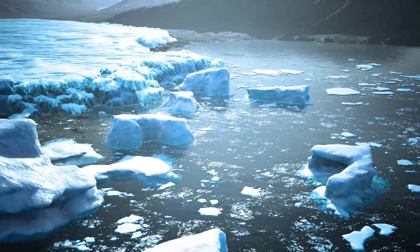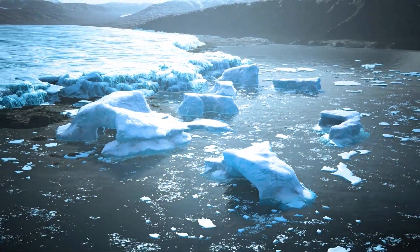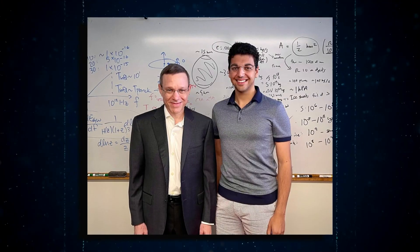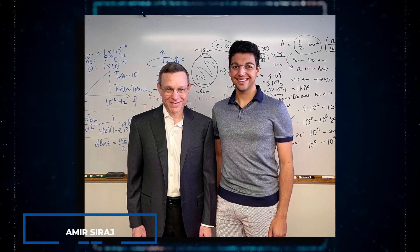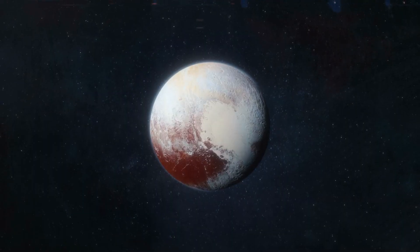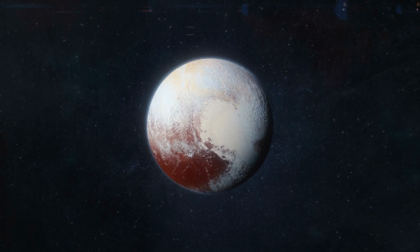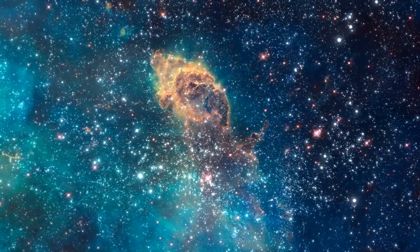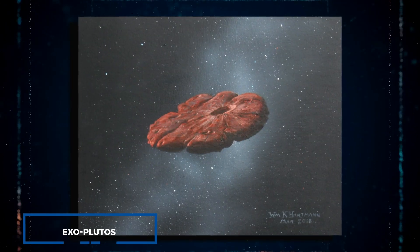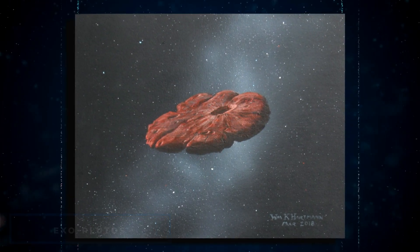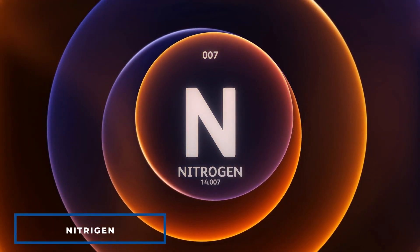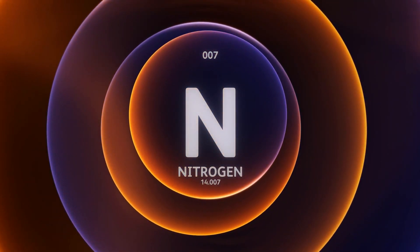One alternative theory suggested that Oumuamua could be a nitrogen iceberg that had broken off from a Pluto-like planet in the distant past. However, Professor Avi Loeb and his colleague Amir Siraj, a Harvard undergraduate, refuted this idea by emphasizing the extreme rarity of pure nitrogen on Pluto and throughout the universe. The projected mass of exo-Plutos required to produce an Oumuamua composed entirely of pure nitrogen would be mind-bogglingly high, rendering this theory implausible.